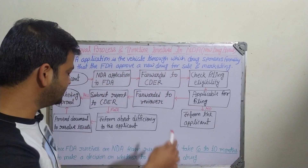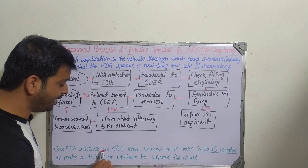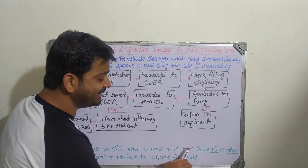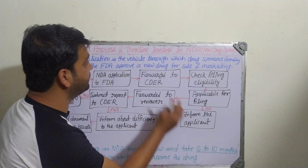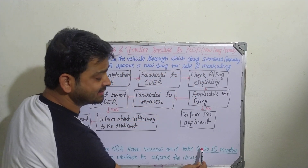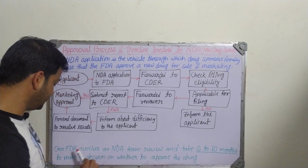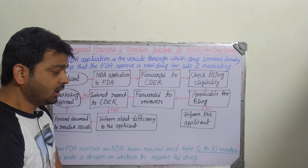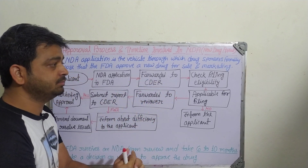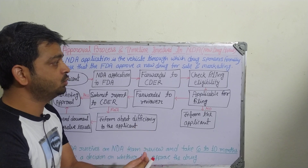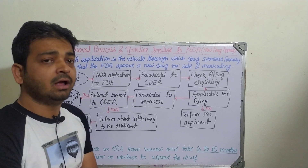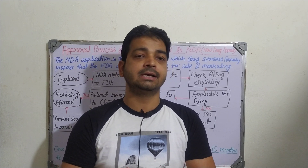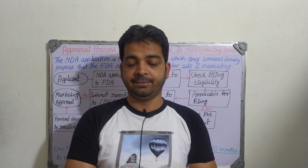So this is the process. Once the FDA receives an NDA — New Drug Application — the team reviews it in this way. The timeline involved in NDA review is a minimum of 6 months and a maximum of 10 months to make a decision on whether to approve the drug or not. After that, the decision will be revealed to the applicants and the process will continue accordingly.